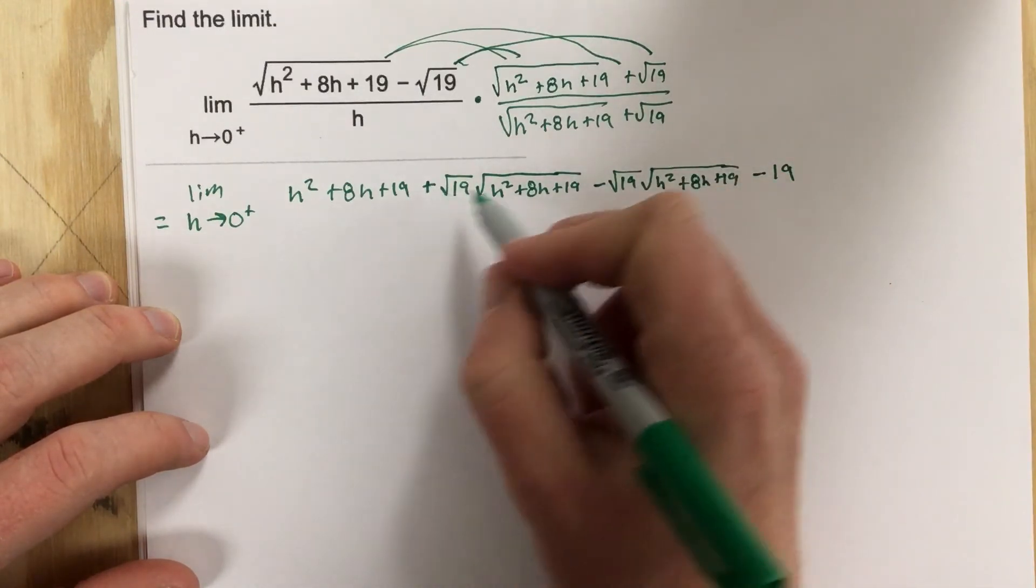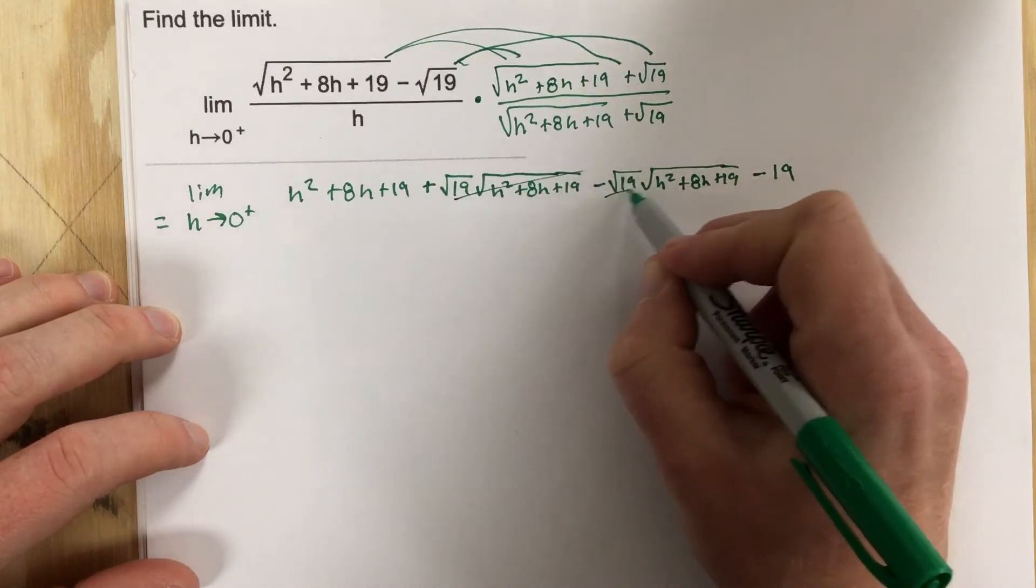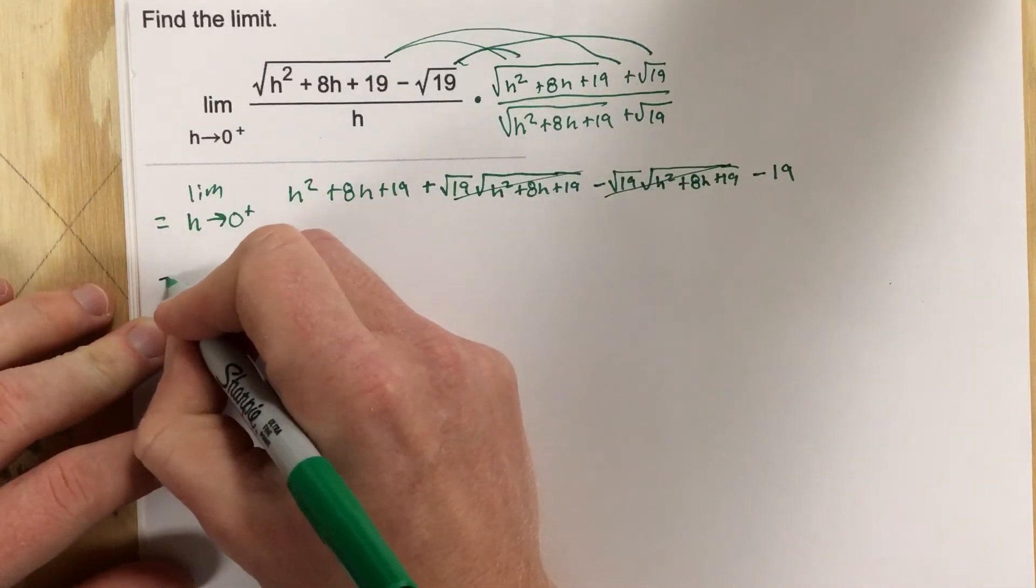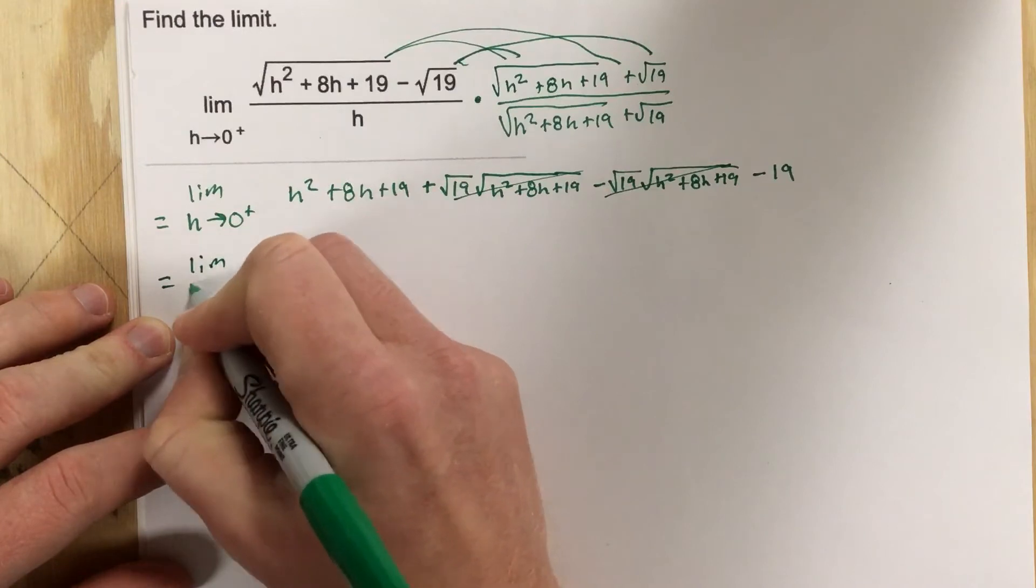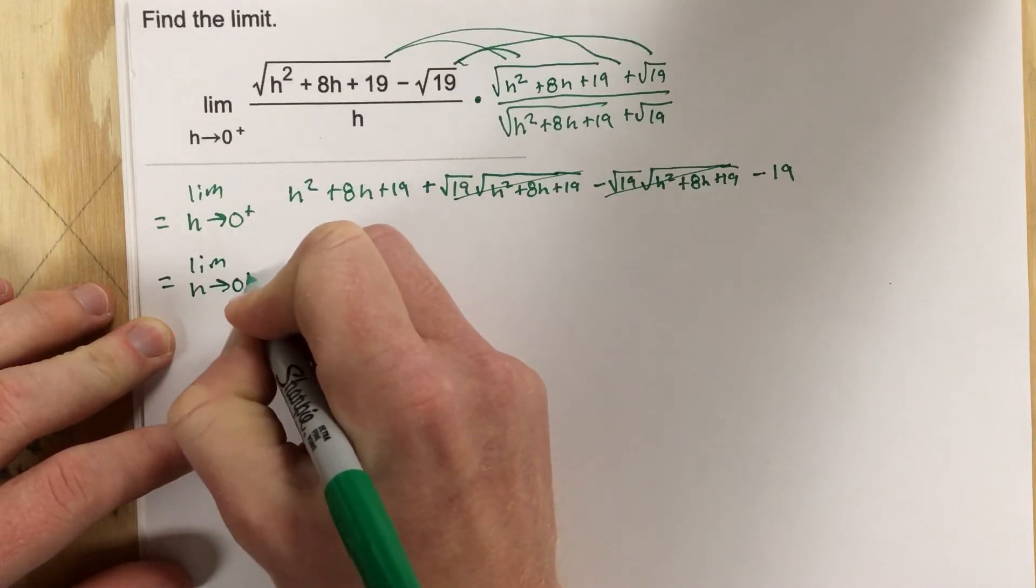You can see that this will cancel here with this term and you're going to be left with limit as h approaches zero from the right.